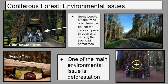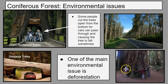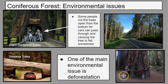Down below we can see a few people surrounding a tree. This tree is not even an adult tree yet, and look how many people it takes to stretch all the way around it. Just as before, deforestation is a huge issue in a coniferous forest.